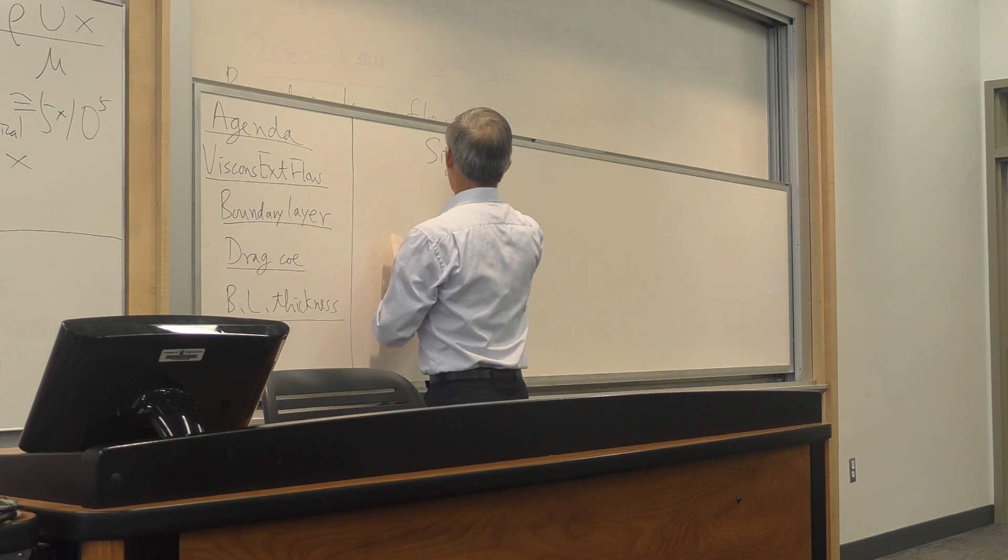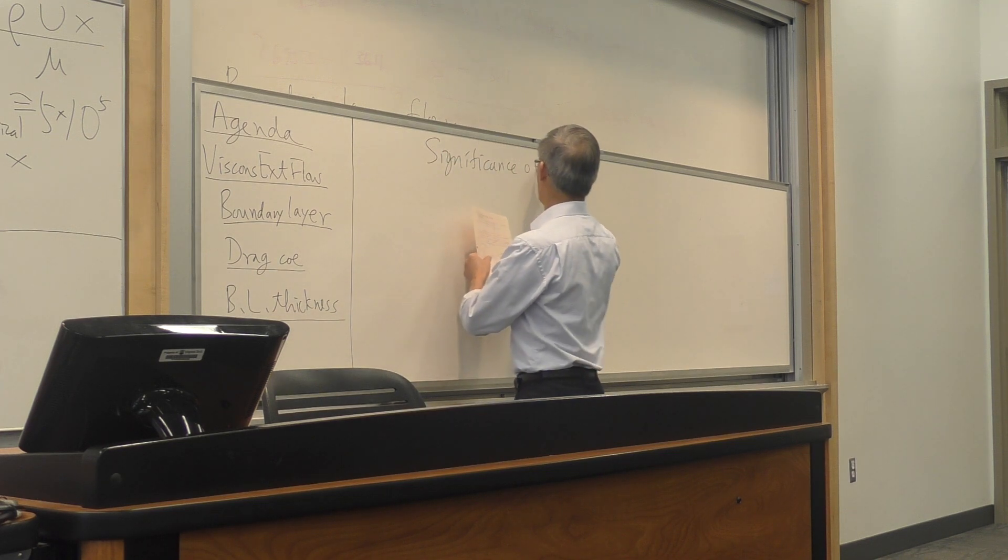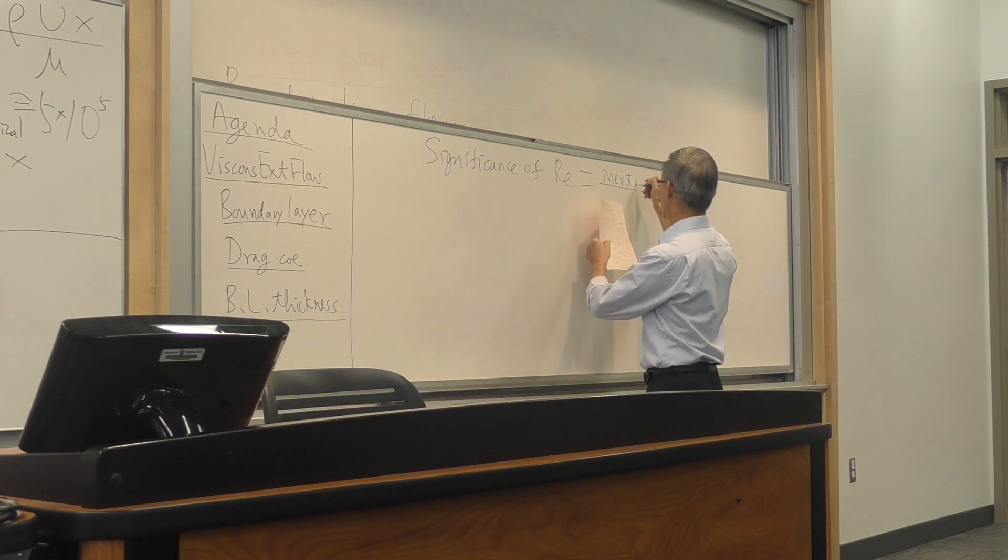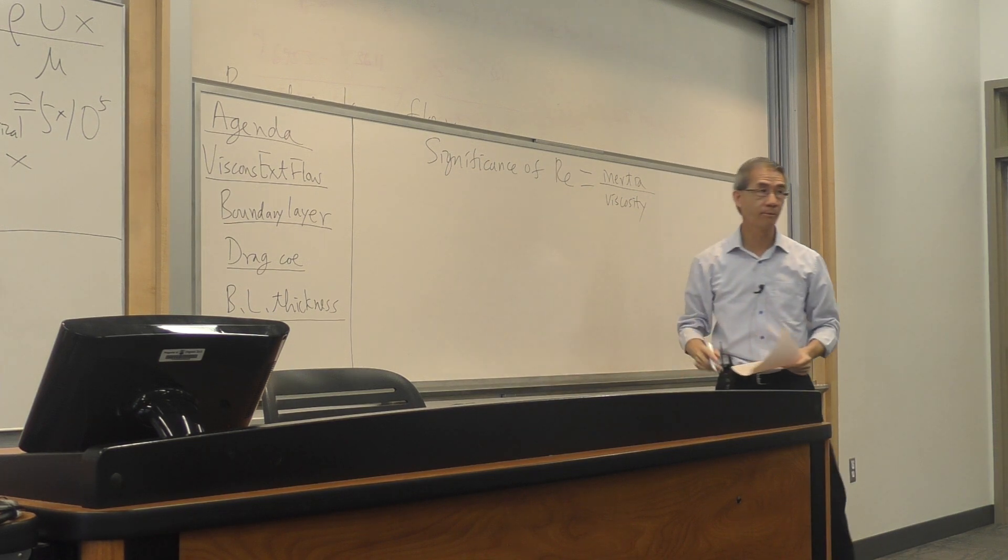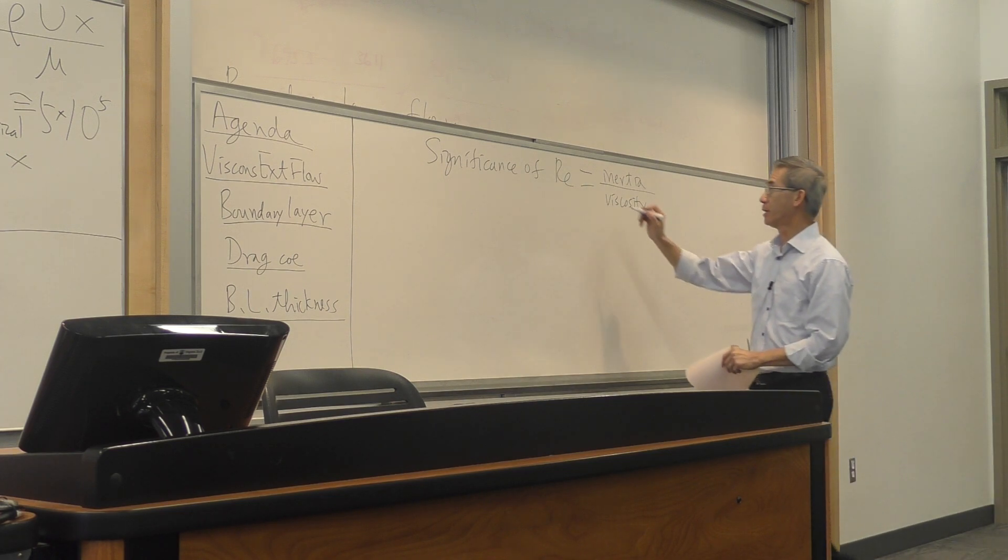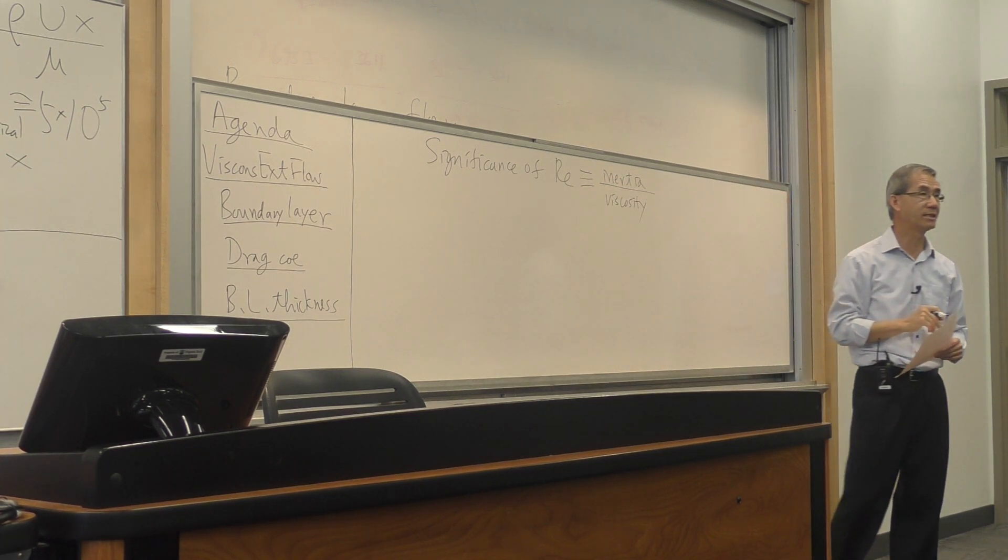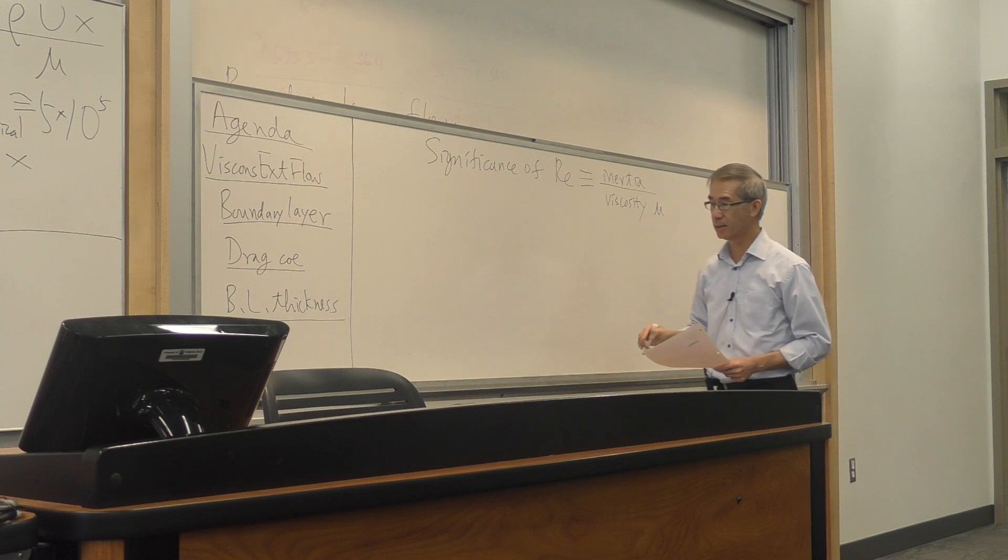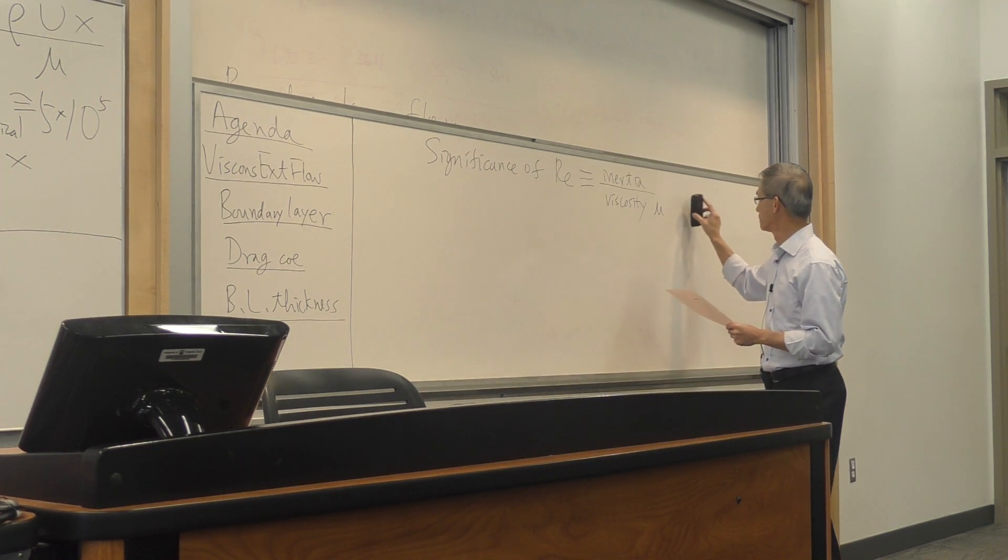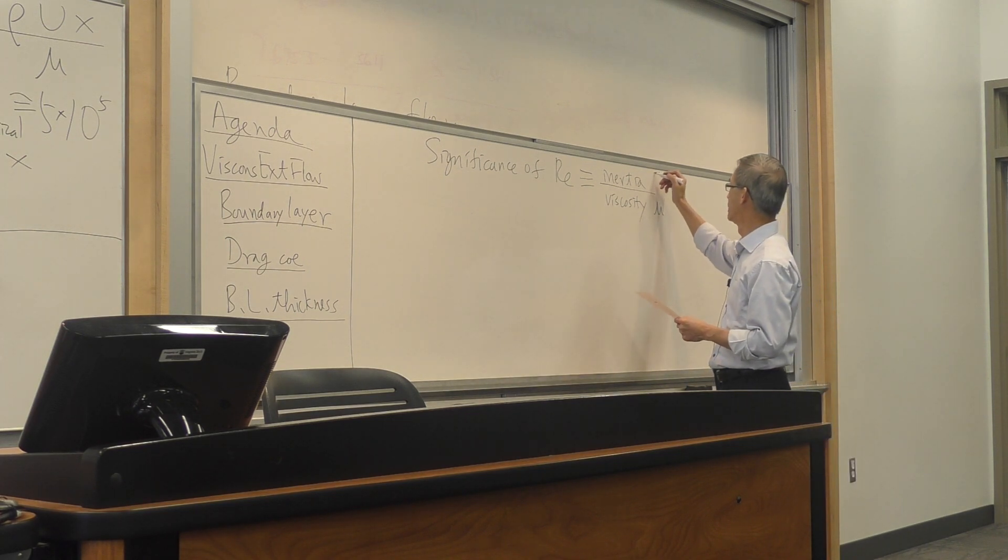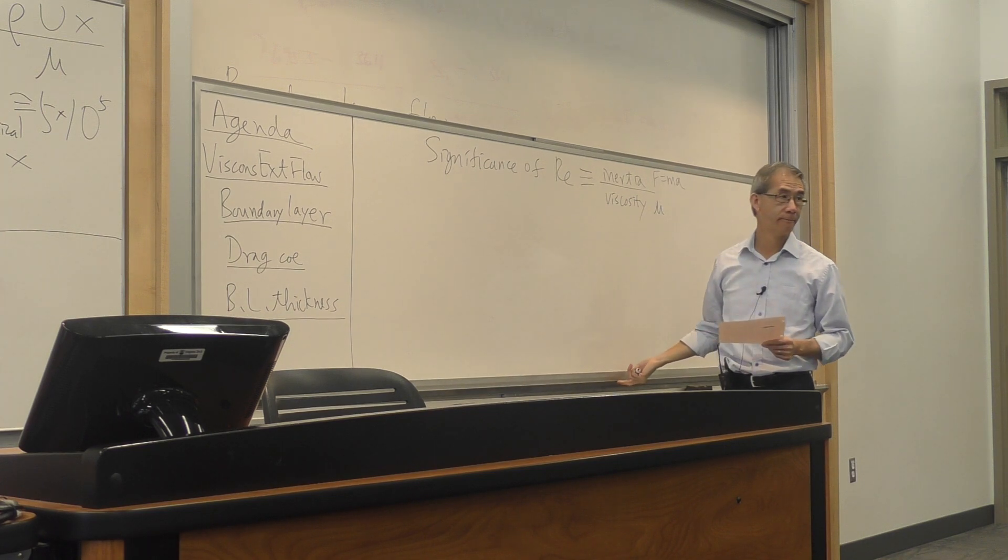So the Reynolds number, we have seen so many times, this is now the first time I can relate that physically to a problem. Back in Chapter 7 on dimensional analysis, when we look at Reynolds number, I told you the definition is such that we are looking at two competing effects in the flow field. The denominator, due to viscosity, obviously, is the frictional effect. The numerator is an inertial effect. Anyone remember what that means? F equals MA. What does that mean? Inertial effect?